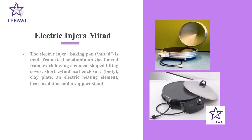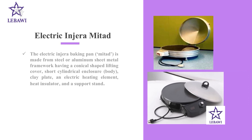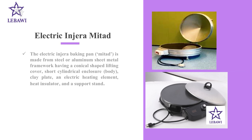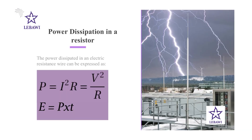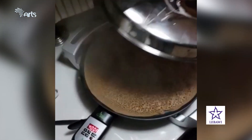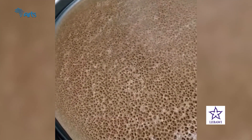The electric injera baking pan, or mitad, is made from steel or aluminium sheet metal framework having a conical shaped lifting cover, short cylinder enclosure body, clay plate, an electric heating element, heat insulator, and a support stand. With the help of the equation for power dissipated in electrical resistances, we can calculate the power consumption of the electric injera mitad used in our homes. The majority of locally produced electric injera mitads are rated at 3.7 to 4 kilowatts, which indicates too much energy consumption. Scientists and engineers are trying their best to design the most efficient electric mitad using the concepts of physics we have discussed today.